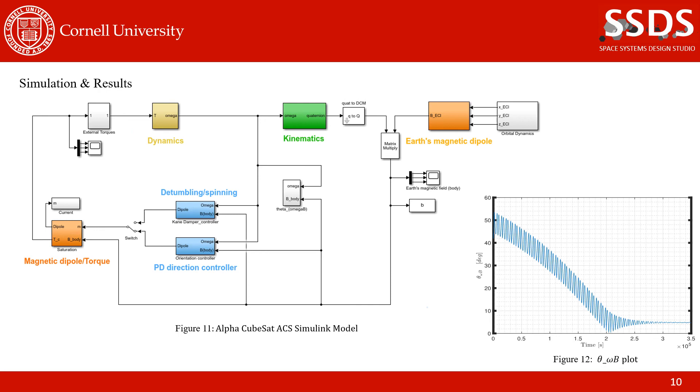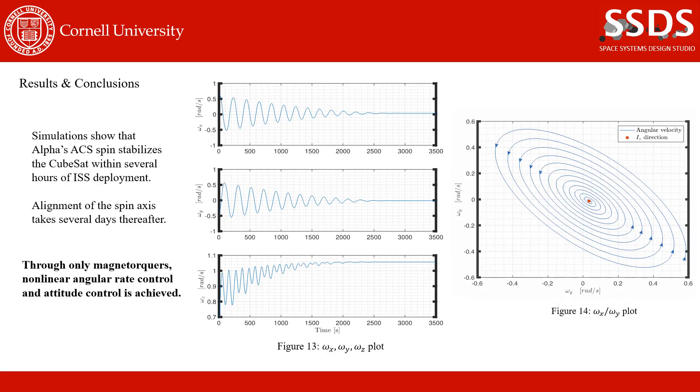Lastly, these control algorithms were implemented in Simulink with the model shown here. On the bottom right are the results for the PD controller, which takes several days to align the spin axis. And finally, the results for the Kane damper are much quicker, on the scale of a few hours. As you can see here on the three plots, the x and y components of the angular velocity are driven to 0, while the z component reaches the desired spin rate of just over 1 radian per second. The figure on the right also shows how the x and y angular velocity components are dampened towards 0, such that all angular velocity is about the desired spin axis. From these results, it can be seen that through only magnetorquers non-linear angular rate control and attitude control can be achieved.